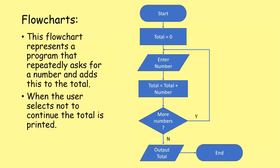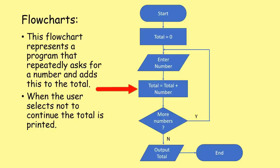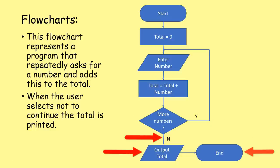Here we have a simple flow chart representing a program that repeatedly asks for a number and adds it to a total. When the user selects not to continue, the total is printed. We start with the terminal symbol, then a process where total equals zero, input with the parallelogram to enter a number, a process to add number to total, a decision on whether to enter more numbers - yes goes back, no outputs the total, and then we end the program.